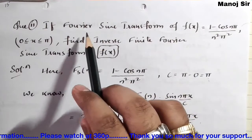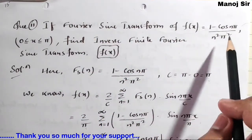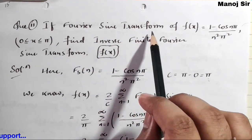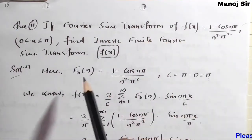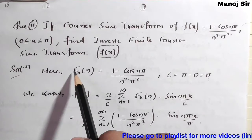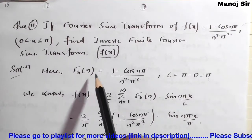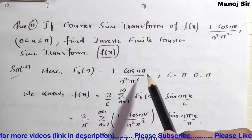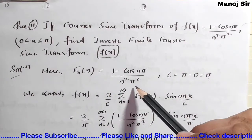Here we have the Fourier sine transform of f(x) — this is not f(x) itself, this is the Fourier sine transform of f(x). So this is Fs(n), meaning the Fourier sine transform of f(x) equals (1 - cos nπ) / (n² π²).